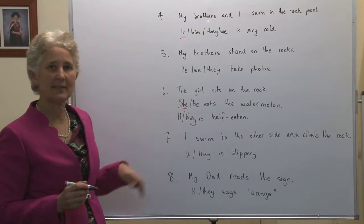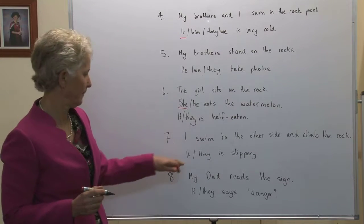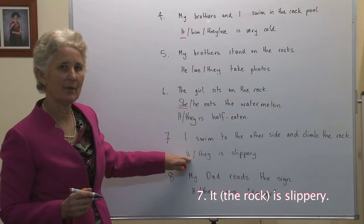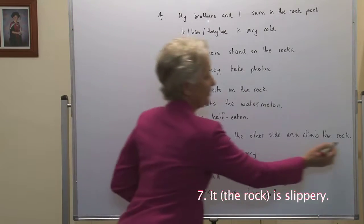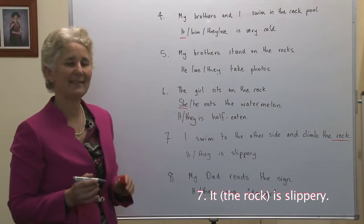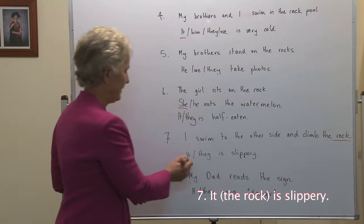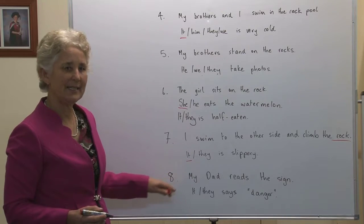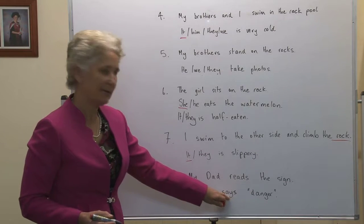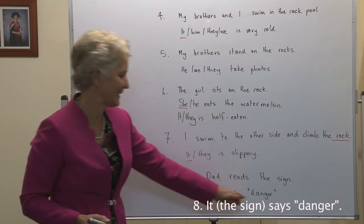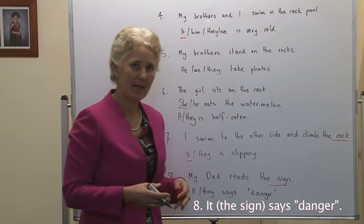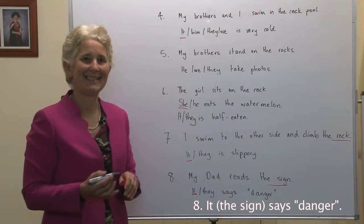Number seven: I swim to the other side and climb on the rock. It or they is slippery. Pearl is referring to the rock — it is singular, third person, a thing. So we need it is slippery. My dad reads the sign. It or they — it says danger. The sign, third person, it is a thing. We need it says danger.